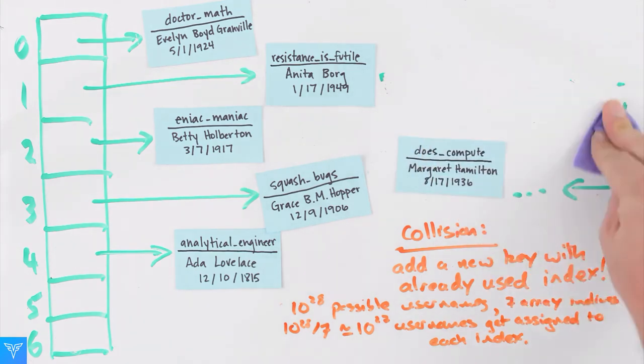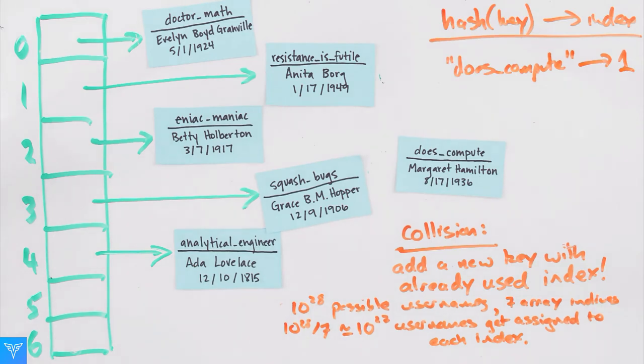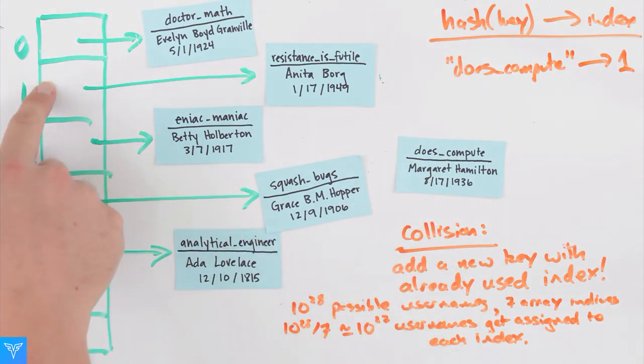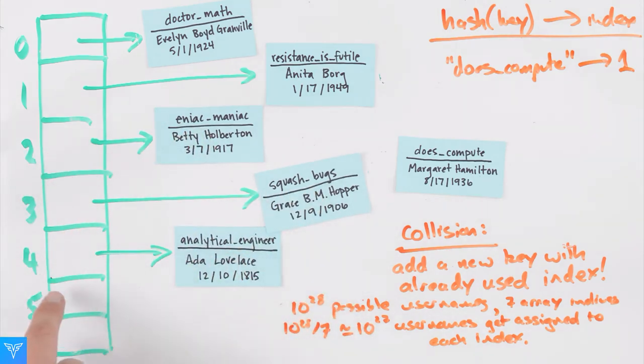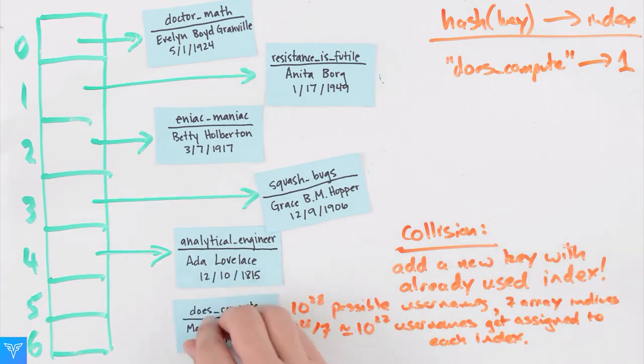A different way of dealing with collisions without using the linked list is called linear probing. The way it works is we start by trying to put information into index one, and notice it's already being used. Then we try the next index, index two, and then go on, and we keep trying new indices until we find one that isn't being used. In this case, index five.